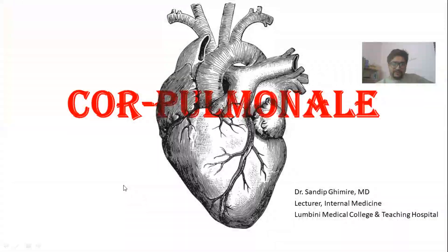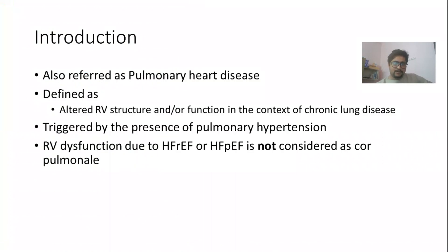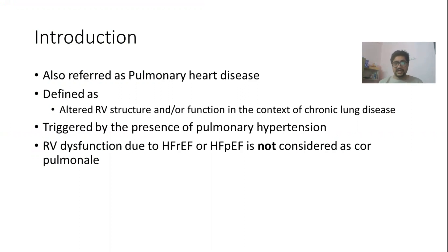In this lecture, we will discuss cor pulmonale. Cor pulmonale is also referred to as pulmonary heart disease. It is defined as the altered right ventricular structure or function in the context of chronic lung disease. It is usually triggered by the presence of pulmonary hypertension. If there is RV dysfunction due to left-sided heart failure, then it is not considered as cor pulmonale.